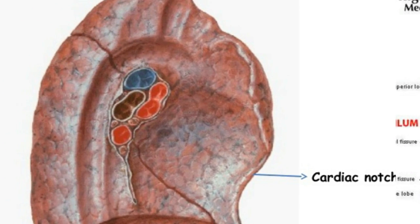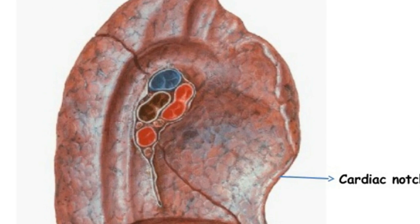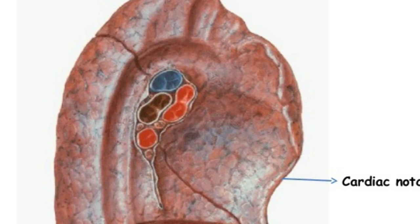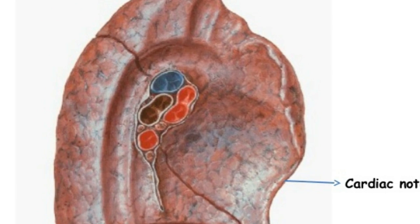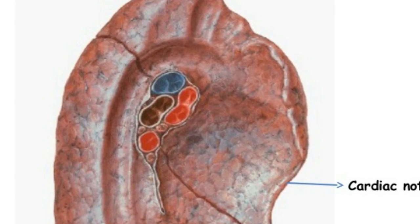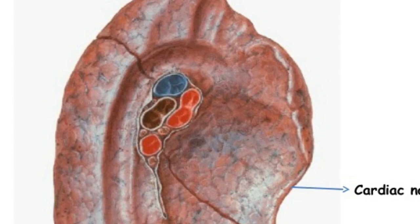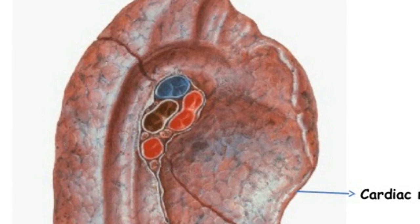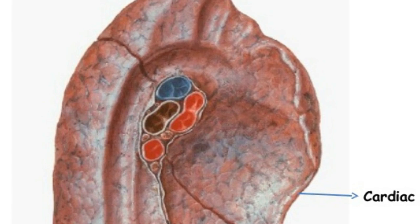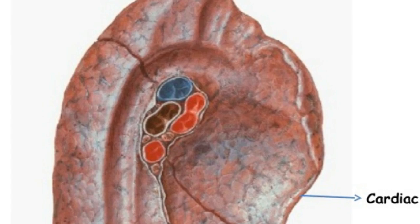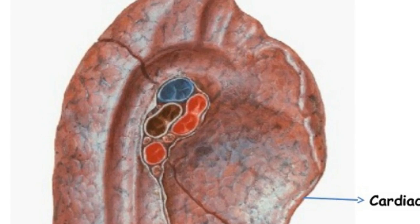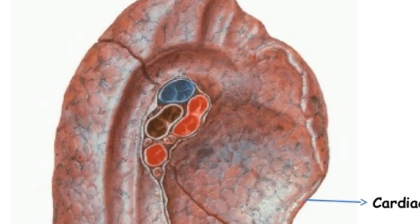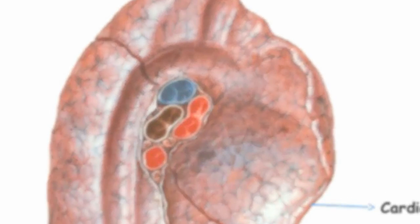The apex is the uppermost part of the human lung, and it is rounded in shape. It extends as high as the bottom or root of the human neck and as low as the first rib. The base of the lung is wide and concave and sits on the surface of the diaphragm.